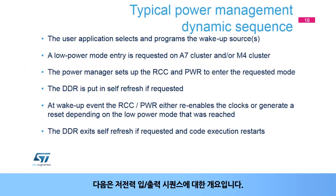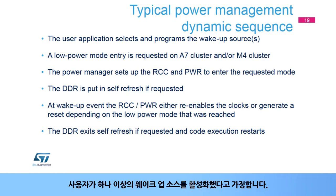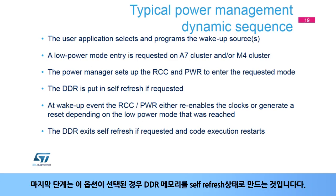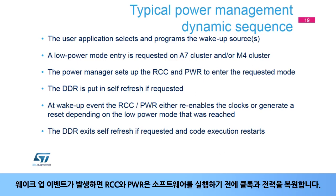Here is an overview of a low power entry-exit sequence. The low power entry is initiated by the user application. On the Linux side, all activity is suspended, then the RCC and PWR are programmed. It is assumed that the user has enabled at least one wake-up source. The last step is to put the DDR memory in self-refresh state if this option is selected. From this moment, the platform is in low power mode, waiting for a wake-up event. When a wake-up event happens, the RCC and PWR restore the clocks and power before allowing the software to run.